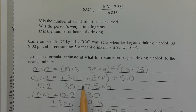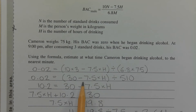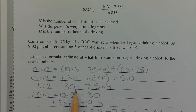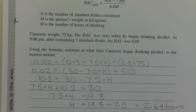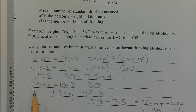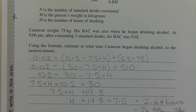Since negatives can be problematic and we want H on the left-hand side, I've added 7.5H to both sides of the equation. This effectively cancels the negative 7.5H and moves it to the other side as a positive, which is more ideal. So the equation becomes: 7.5H plus 10.2 is equal to 30.